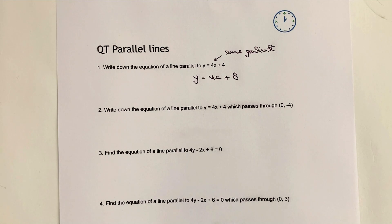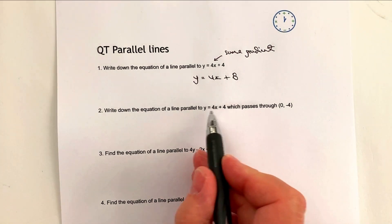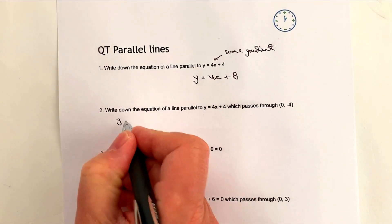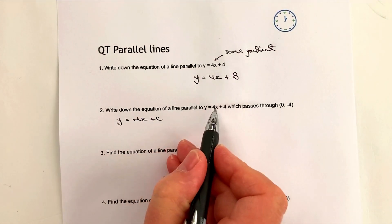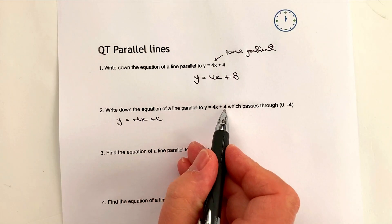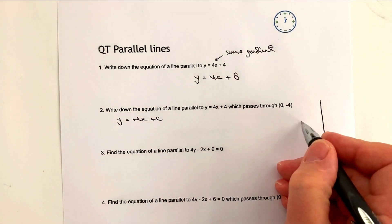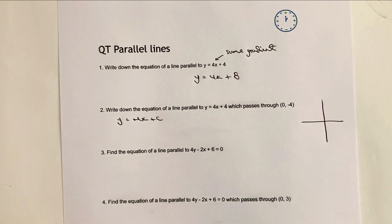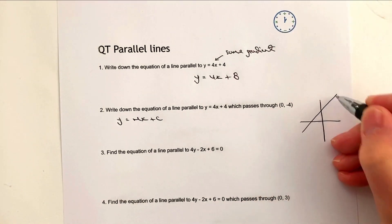Number two: write down the equation of a line parallel to that which passes through (0, -4). We've got the standard equation of a line, y = mx + c, where m is the gradient and c is the y-intercept. If I sketch this out, we've got a line that goes through y = +4 with a gradient of 4.